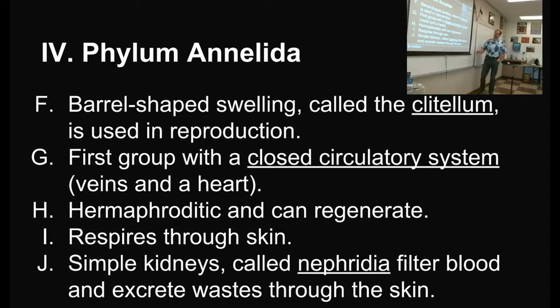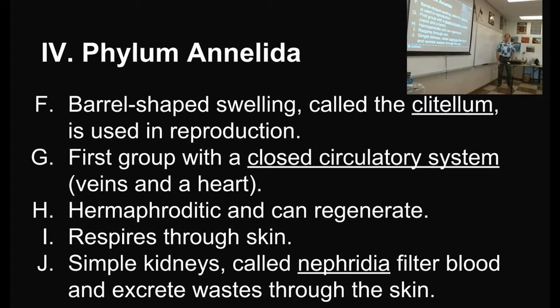They're the first group with a closed circulatory system. Everything else we've seen does not have veins and a heart like the earthworm does. The earthworm has not just one heart, but several hearts, and these several hearts squeeze and circulate the blood around the worm. This is the first group that has that — nematodes don't have it, flatworms don't have it, sponges and cnidarians don't have it either.